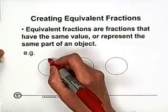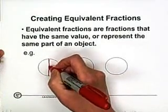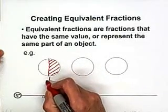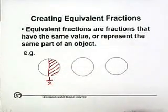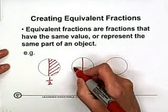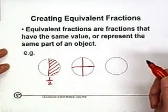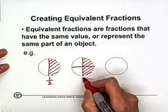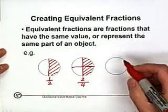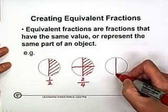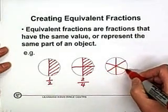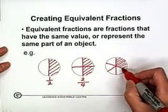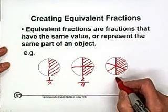Let's see a pie cut in two parts. We select one part, which is represented by one over two. But if you cut the pie smaller into four parts and you take two parts, we have two over four. And even if you make the cuts smaller, you get six parts and you take three parts — you get three over six.